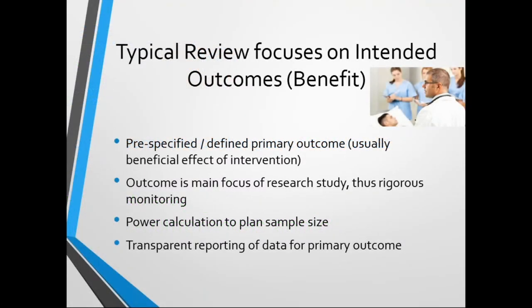The first aspect is that the typical systematic review is designed to evaluate a beneficial outcome or an intended outcome. These beneficial outcomes are usually pre-specified, well-defined, and there's a clear purpose for measuring them. Beneficial outcomes are usually the main focus of the research study, and therefore they're rigorously monitored and clearly defined.